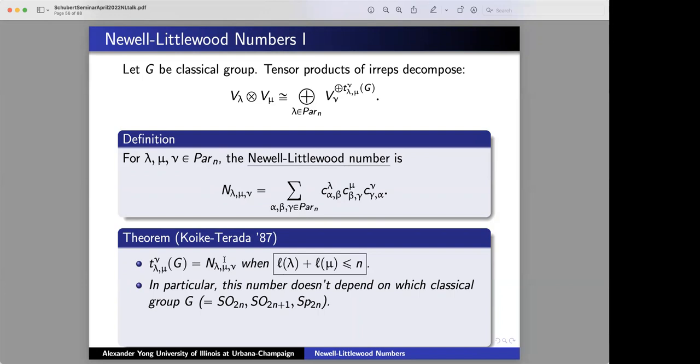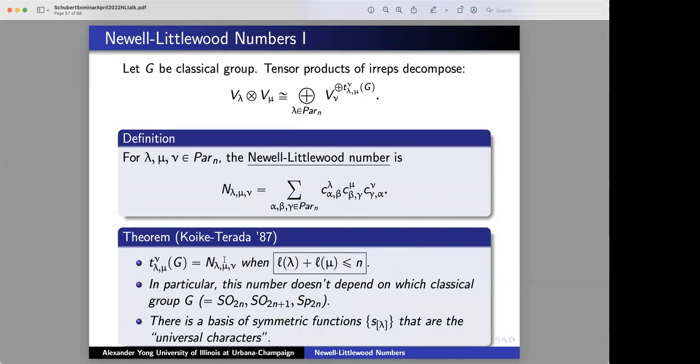And then one final thing which doesn't come up in this talk, but which you may find interesting is that Klyachko and Terada also define a basis of symmetric functions that behave precisely like the Schur polynomials do. They are the universal characters for the situation, by which I mean if you multiply two of their symmetric functions and expand in the basis of their symmetric functions, then you'll get exactly N_lambda_mu_nu.